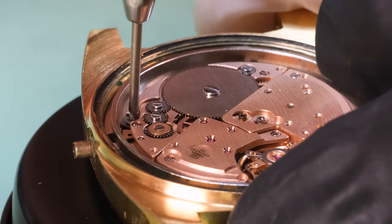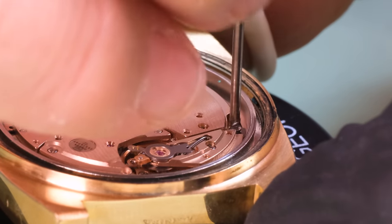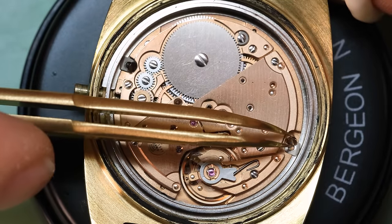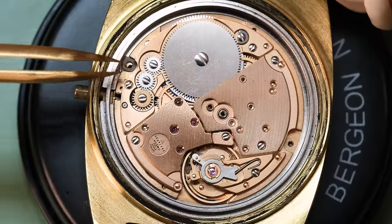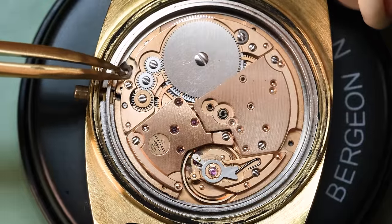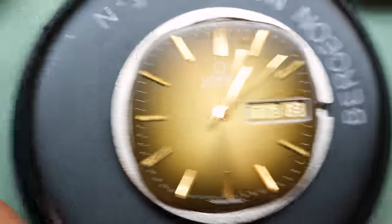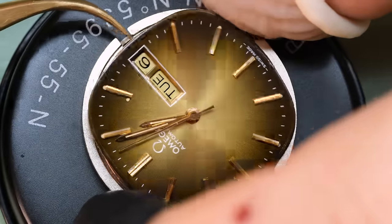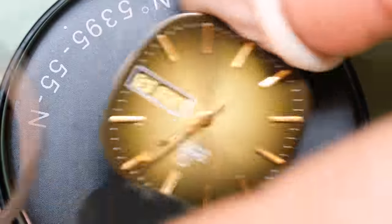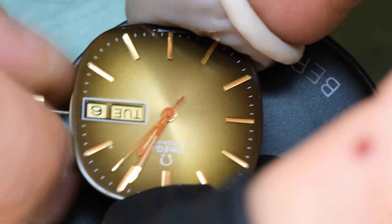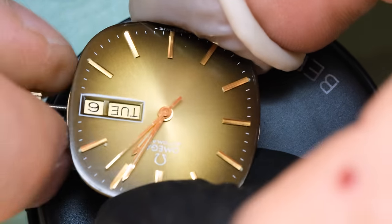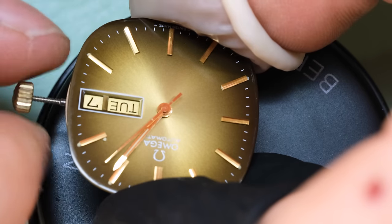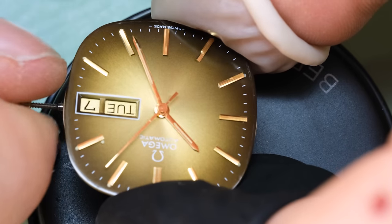Omega was pretty early in making these spring-loaded pushers for taking the crown out. So we can use that and then we unscrew the case clamps and we can take the movement out of the case. And the dial is really nice, I must say. Kind of reminds me of an old Les Paul sunburst guitar. It's kind of a bronze gradient sunburst. Very nice.